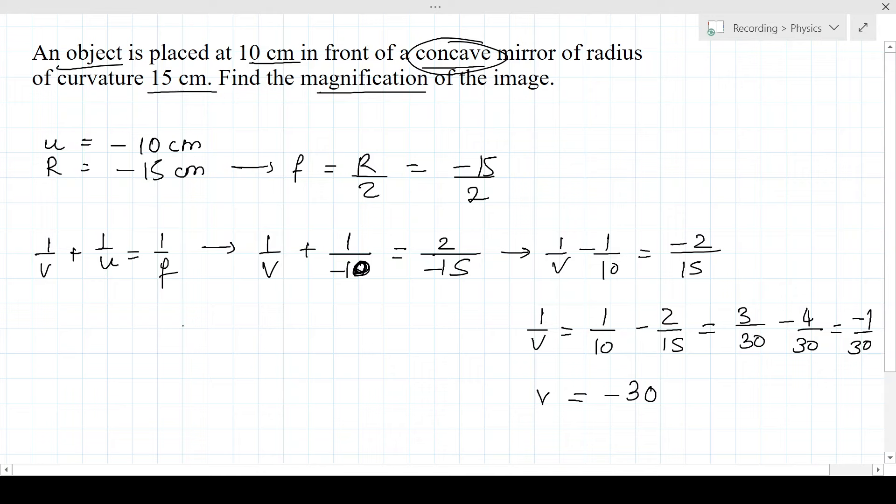Now we are going to put this inside the magnification formula. M equals minus V upon U, that is minus minus 30 upon minus 10, that is equal to minus 3.